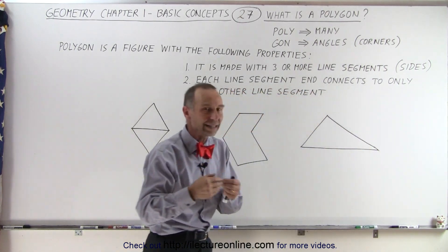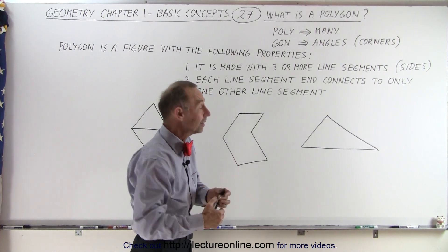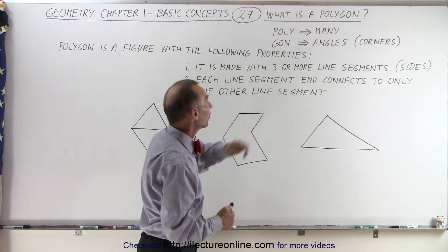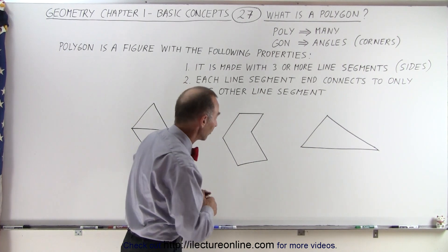So in no cases do I have a side connecting to more than one other side. And so therefore this is legitimately a polygon, specifically a triangle. It has three sides.